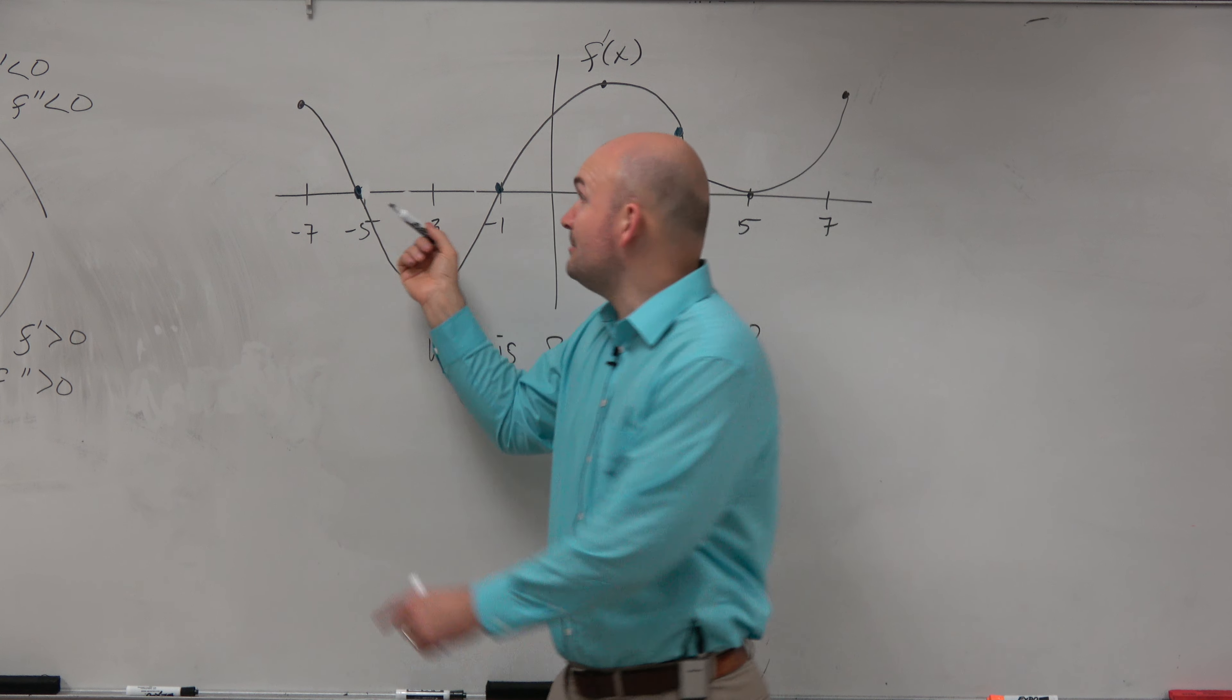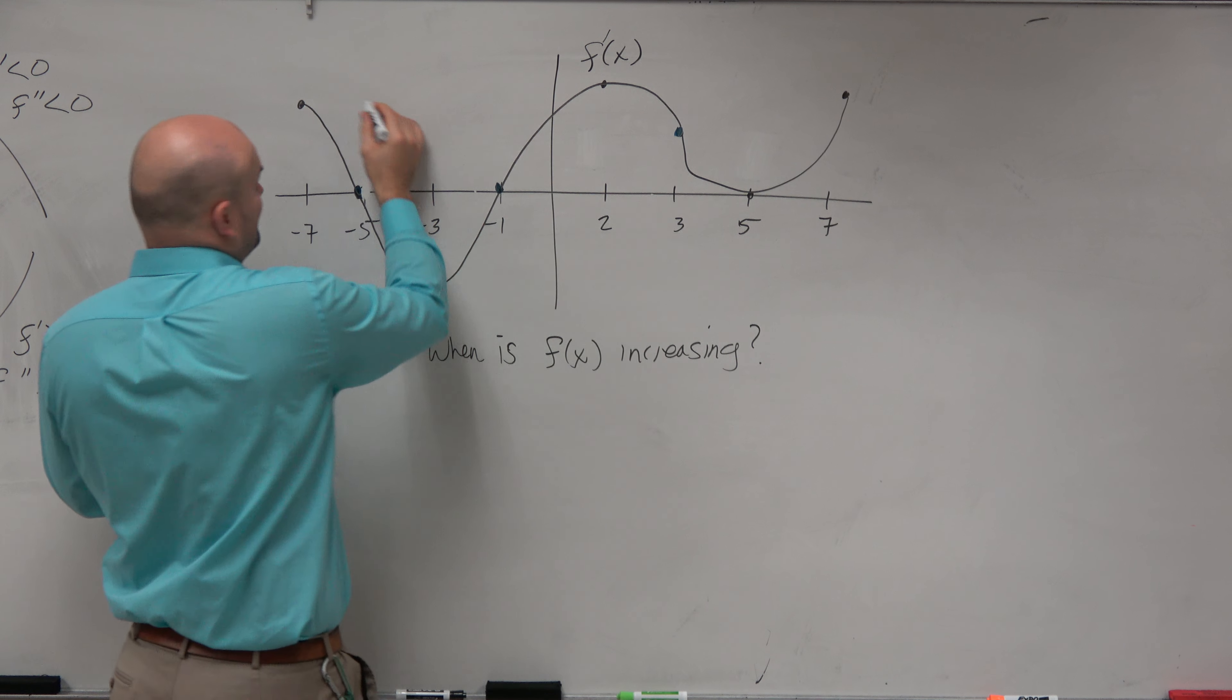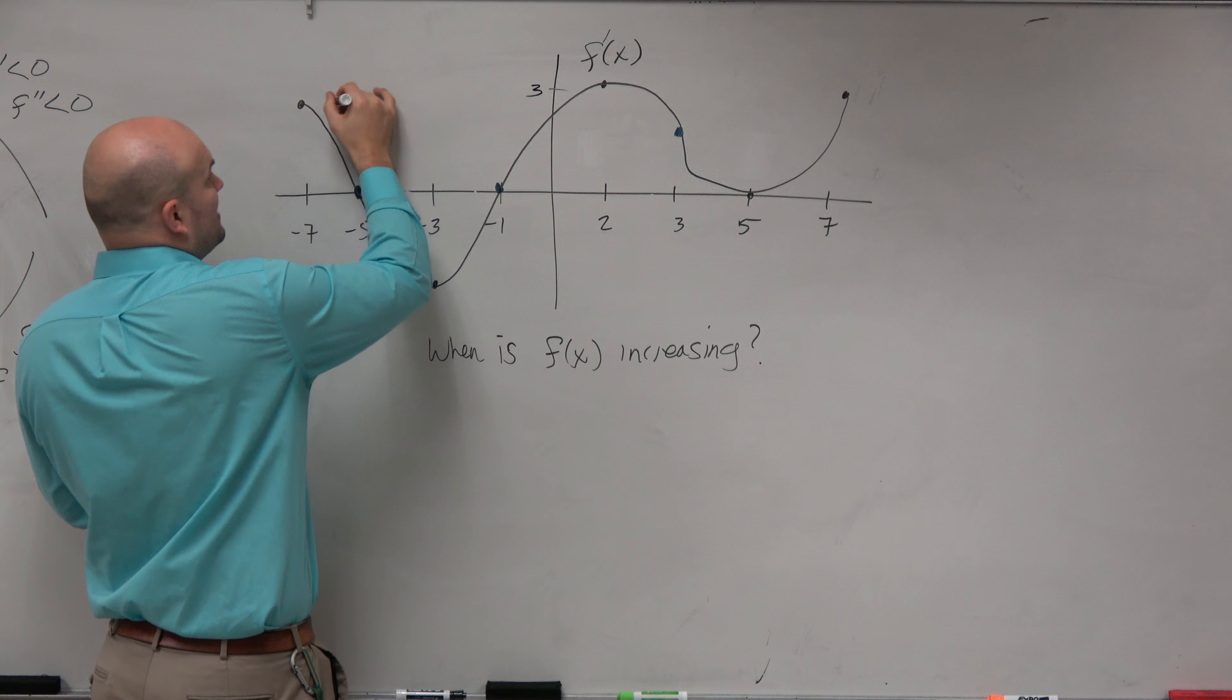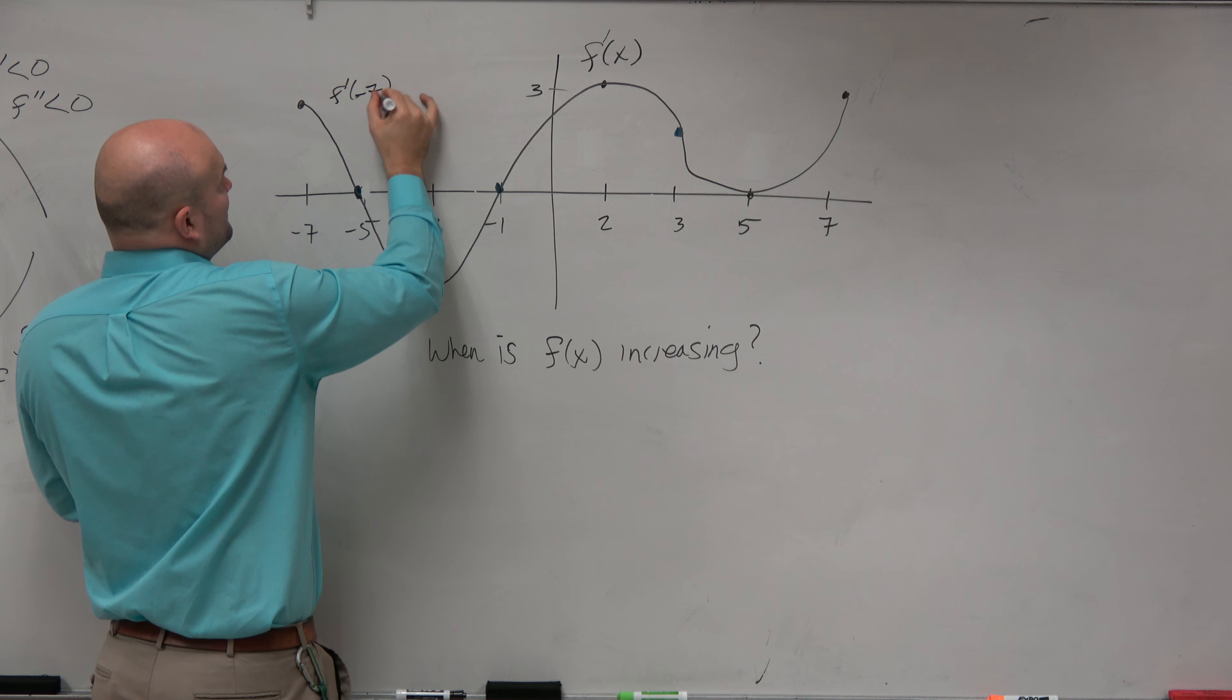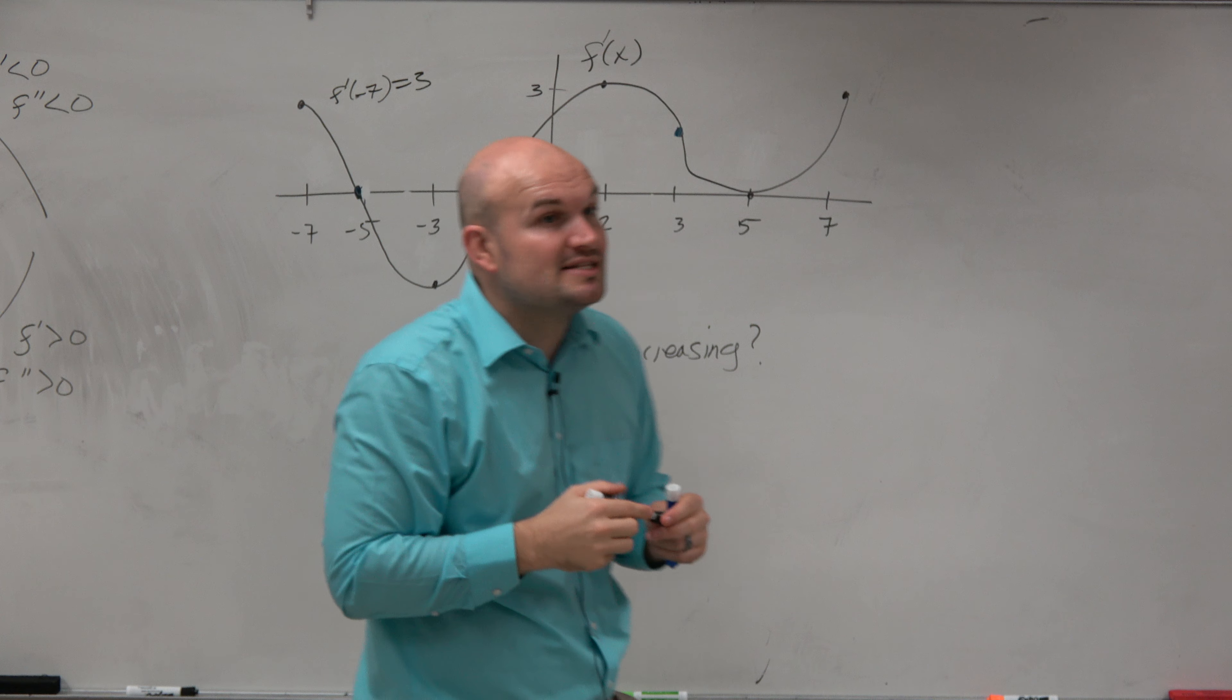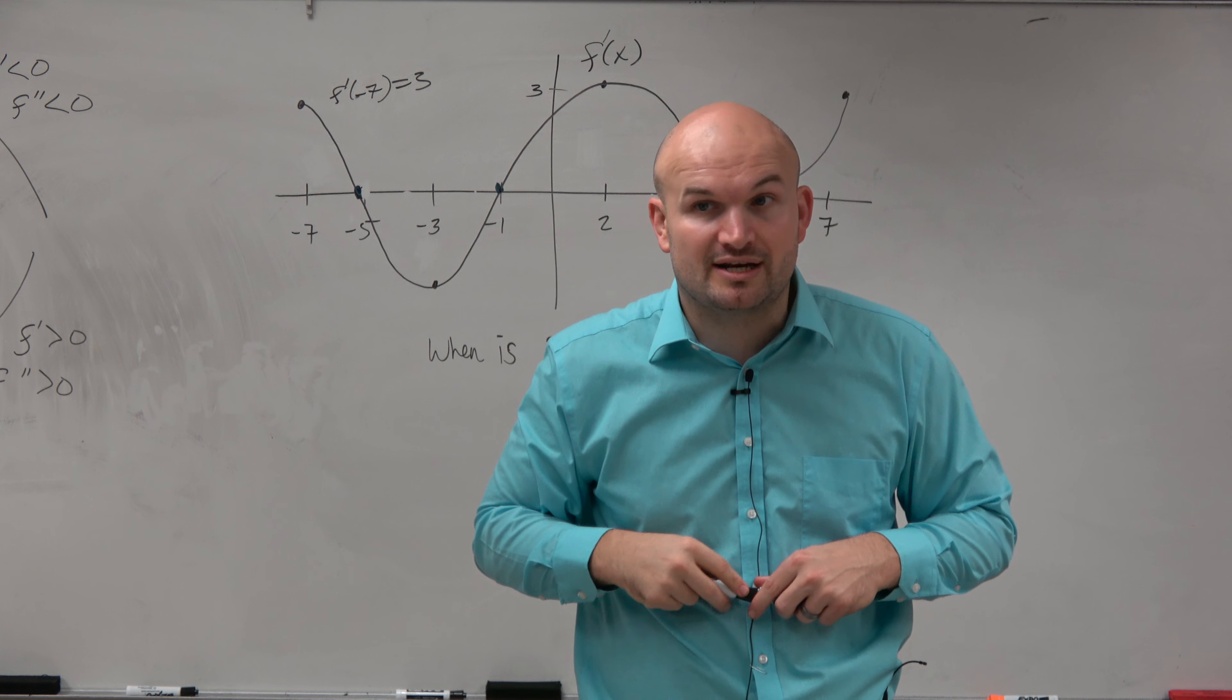The slope of these—remember, this is f prime of x. For instance, let's say this is 3. That means f prime of negative 7 equals 3. Is the slope of your function positive or negative?